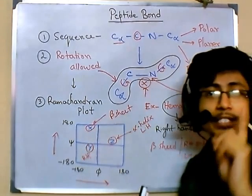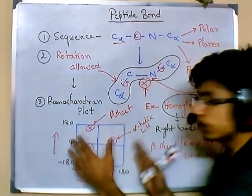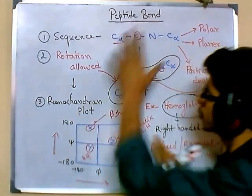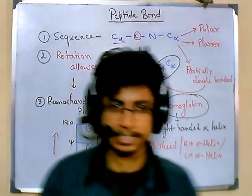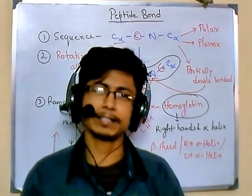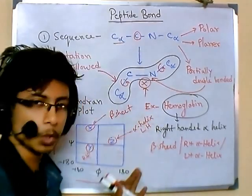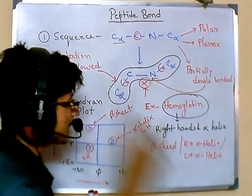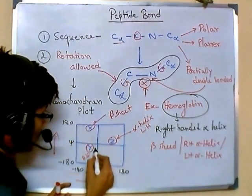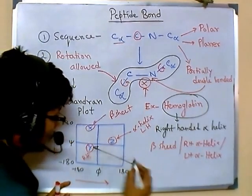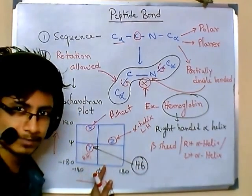This is very important — many questions in CSIR NET come from this topic. To summarize what you need to know about peptide bonds and the Ramachandran plot: hemoglobin should be placed in the right-handed alpha helix region of the Ramachandran plot.